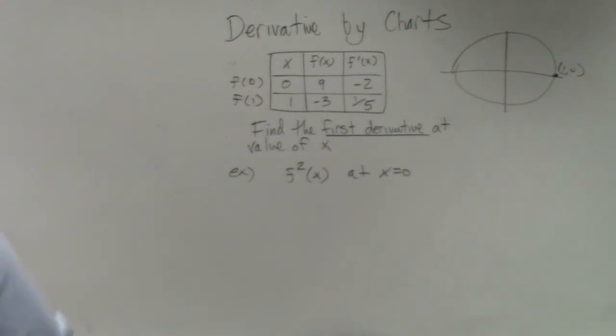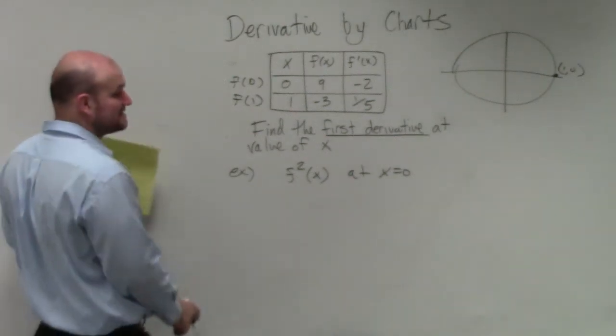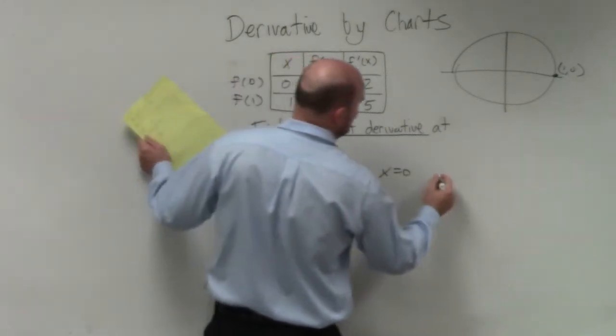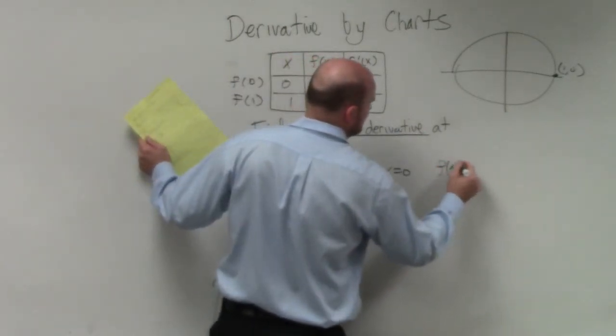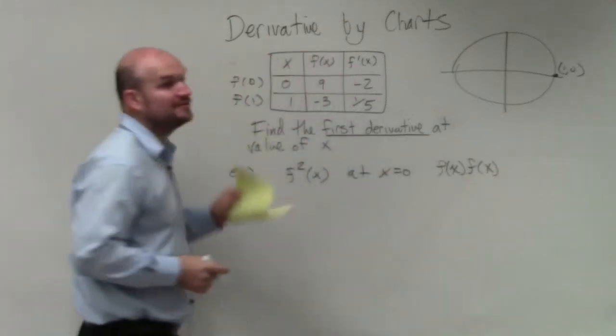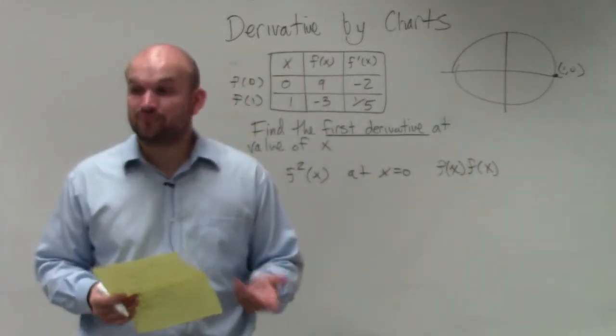So next example we're going to look into is f squared of x. Please remember, f squared of x is written as f of x times f of x. So therefore, now we know that we need to use the product rule again.